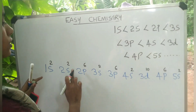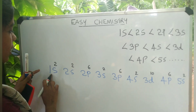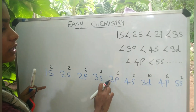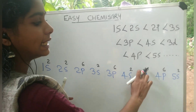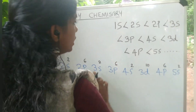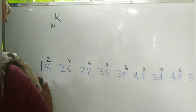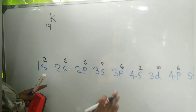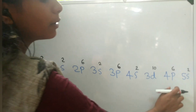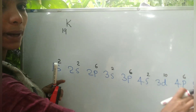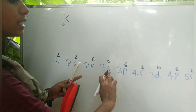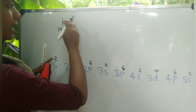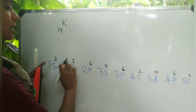The electronic configuration sequence is: 1s2, 2s2, 2p6, 3s2, 3p6, 4s2, 3d10, 4p6, 5s2. This is how we use this energy order to write electronic configurations.